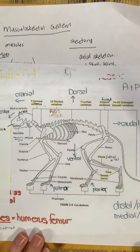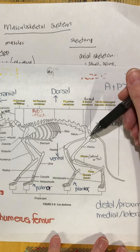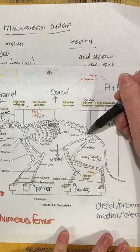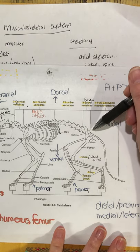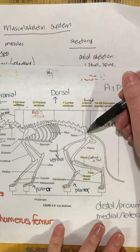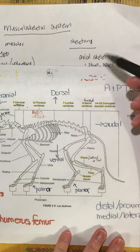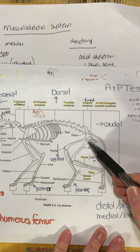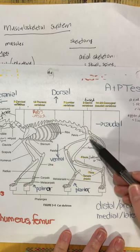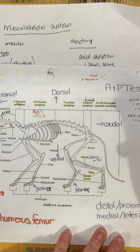Moving on to the hind limb — the most proximal bone is the pelvis. Interestingly, the pelvis is actually made up of three different bones, three on each side for a total of six, but we're good here to just know this bone as the pelvis. The pelvis articulates with the femur, which is the next most distal bone — the long upper bone of the hind limb.